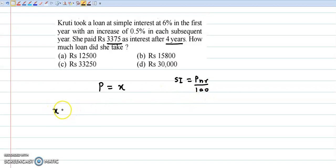So for the first year X into 1 into rate is 6%, so 6 upon 100. Plus second year principle is X, N is 1 year. Rate increases by 0.5, so second year interest rate is 6.5%, so into 6.5 divided by 100.